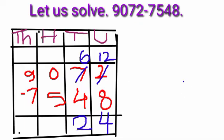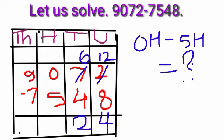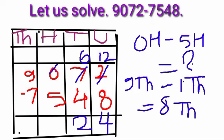We cannot subtract 500 from 0 hundreds. Therefore, we untie 1000 from 9 thousands.